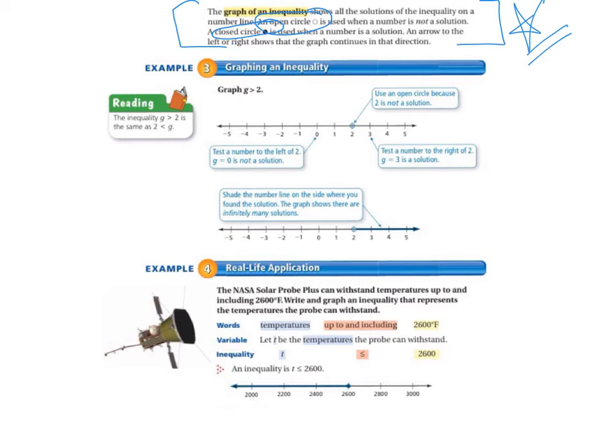So if you look at the bottom number line, we've shaded the number line on the side where we found the solution. So the graph shows there are infinitely many solutions. So G greater than 2 is shown by a circle on the 2 and a line going to the right.